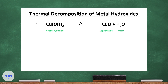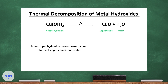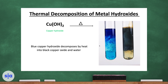Returning to thermal decomposition of metal hydroxide: copper hydroxide breaks down into copper oxide and water. Copper hydroxide is blue in color, and when it decomposes by heat, it gives copper oxide, which is black. As you can see in this picture, the blue copper hydroxide in the tube turns into black copper oxide and water upon heating.